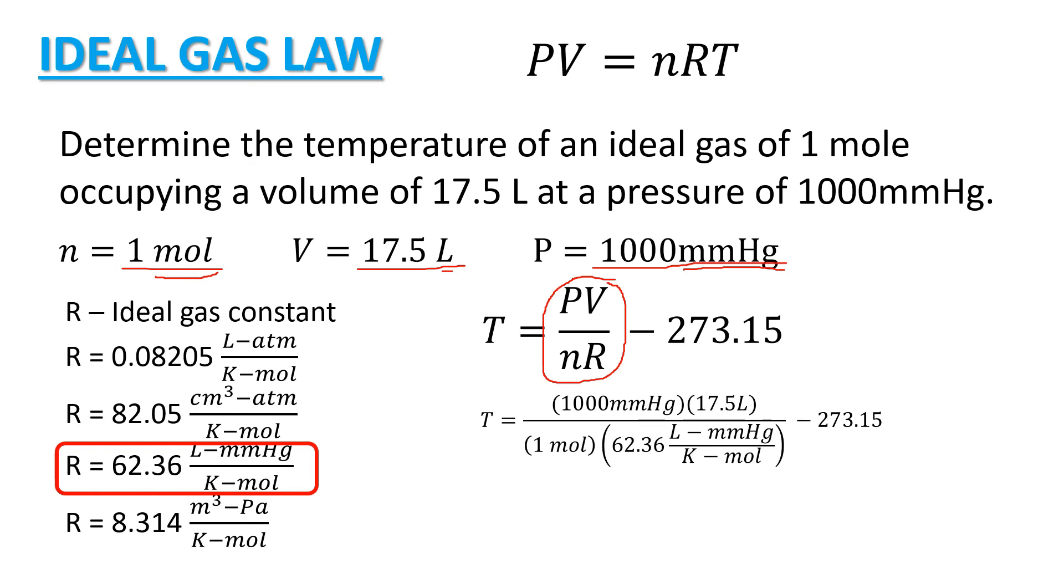So, as you can see here, the unit of moles will be cancelled out as well as the mmHg and lastly the liters. Leaving us with the unit of K which is in terms of absolute temperature. So, whatever we get here is in terms of absolute temperature and then we will subtract it with 273.15 and now we will get a value of 7.48 degree Celsius. The unit is already in degree Celsius.